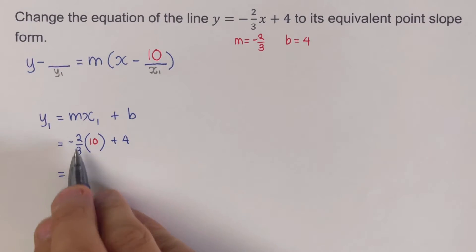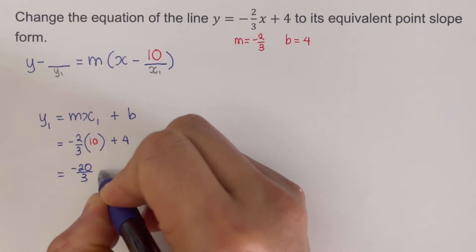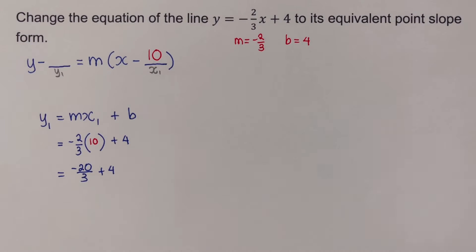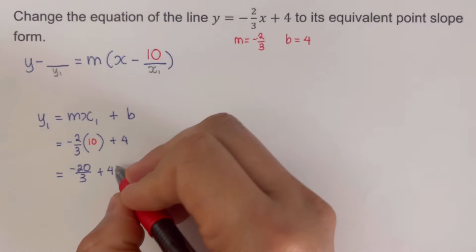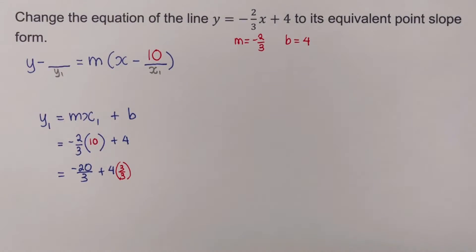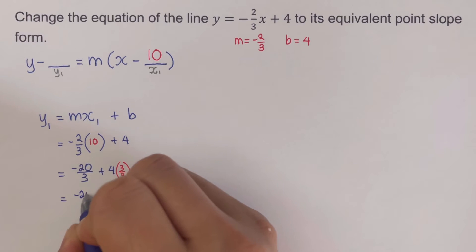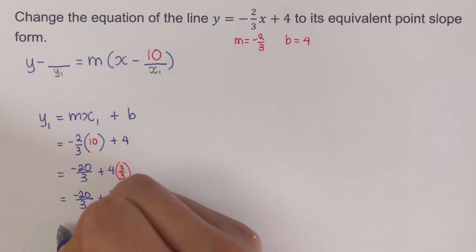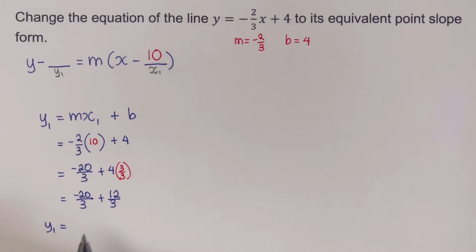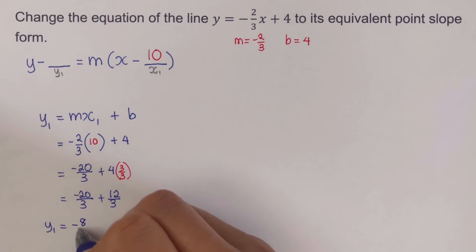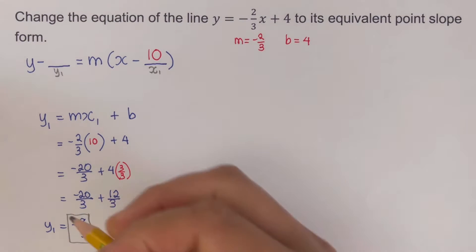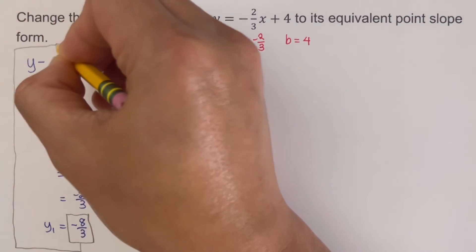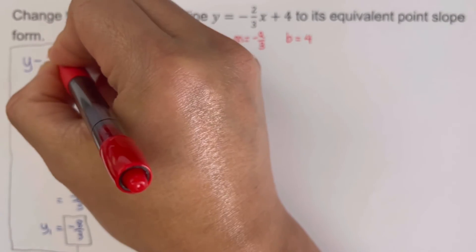Simplifying: negative 2 thirds times 10 is negative 20 over 3, plus 4. We need common denominators, so we multiply 4 by 3 over 3, giving us negative 20 over 3 plus 12 over 3. Adding these together: negative 20 plus 12 is negative 8, so y sub 1 equals negative 8 over 3. This is the number we put into the blank for y sub 1.